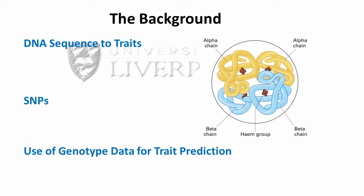For example, genetic variation accounts for 80% of height variability in the population. Hundreds of variants — some implicated in increasing height and others in decreasing height — have been reported. So if an individual carries a large number of variants associated with larger height, we can predict they will have a height greater than the population average.